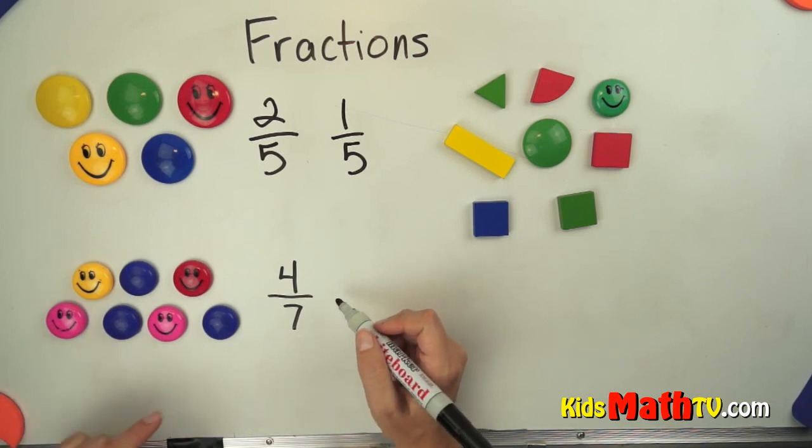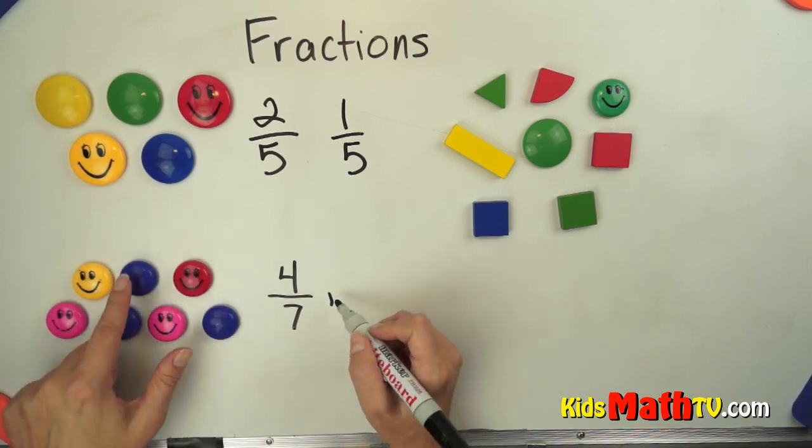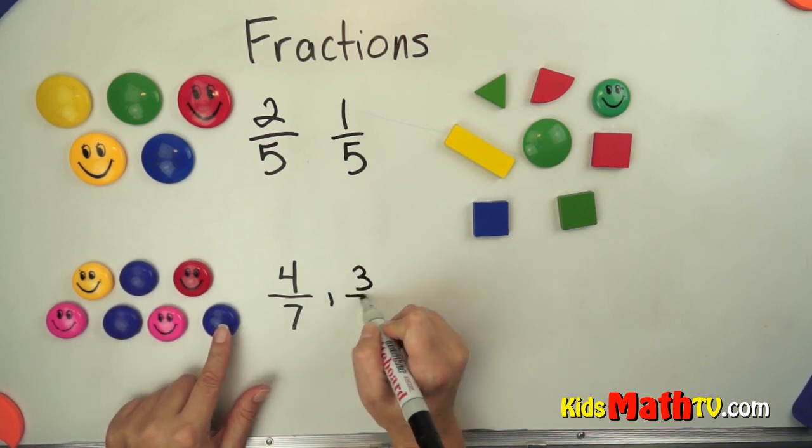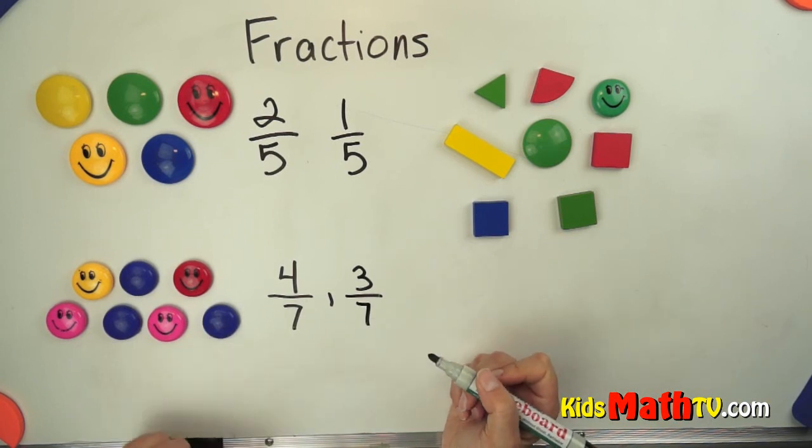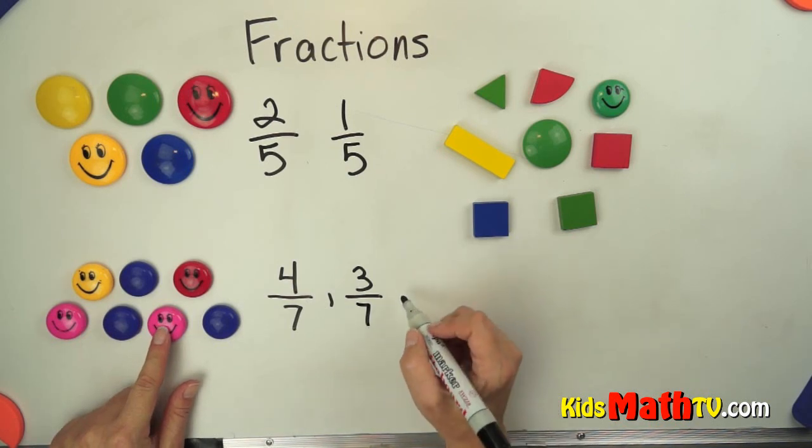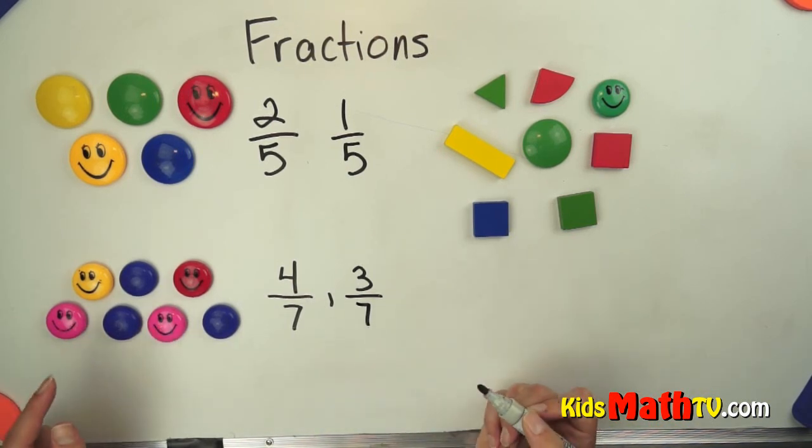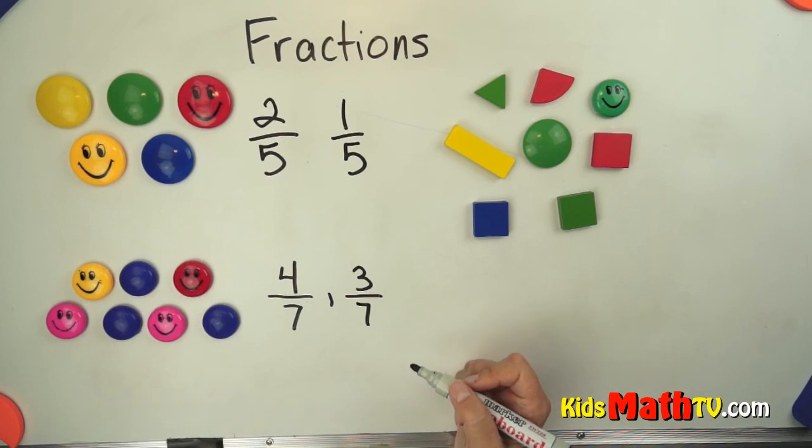I could do blue. How many are blue out of the total? One, two, three are blue, and there are seven total shapes here. If I wanted to do pink, it would be two pink out of seven total. One yellow out of seven total.